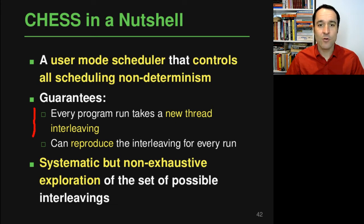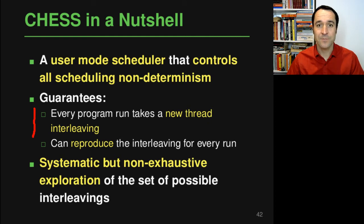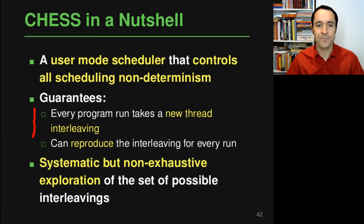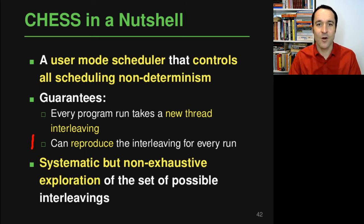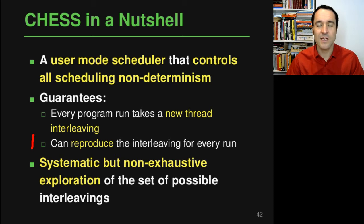The first guarantee is that every program run takes a new thread interleaving — if you execute the program three times, you will have triggered three different interleavings that potentially lead to different visible behavior. The second property is that CHESS can reproduce the interleaving of every run. This is very important because otherwise you have Heisenbugs that you observe once but cannot reproduce. With CHESS, if you have seen a run that exposes a bug, you can reproduce it and debug it in more detail.